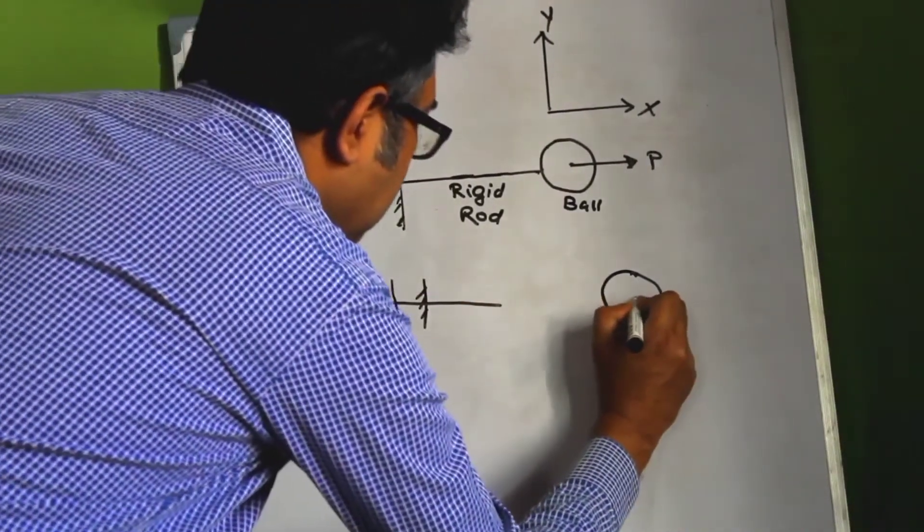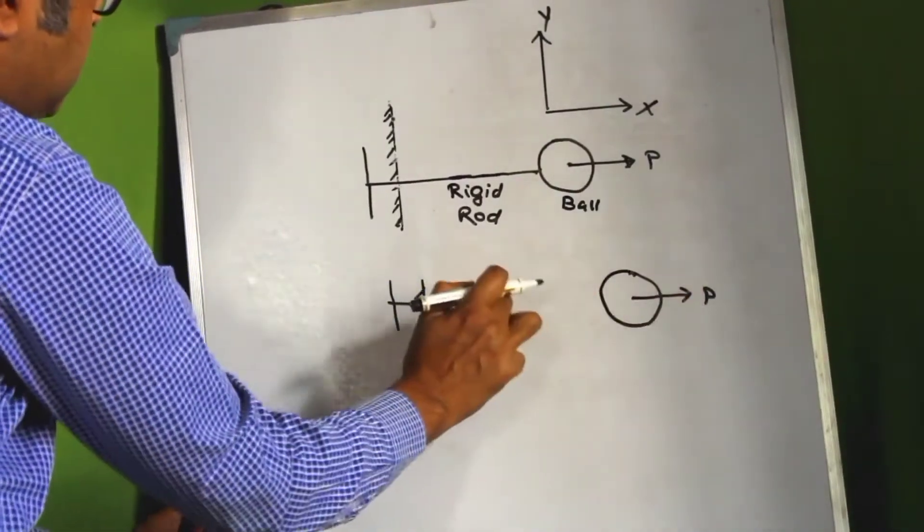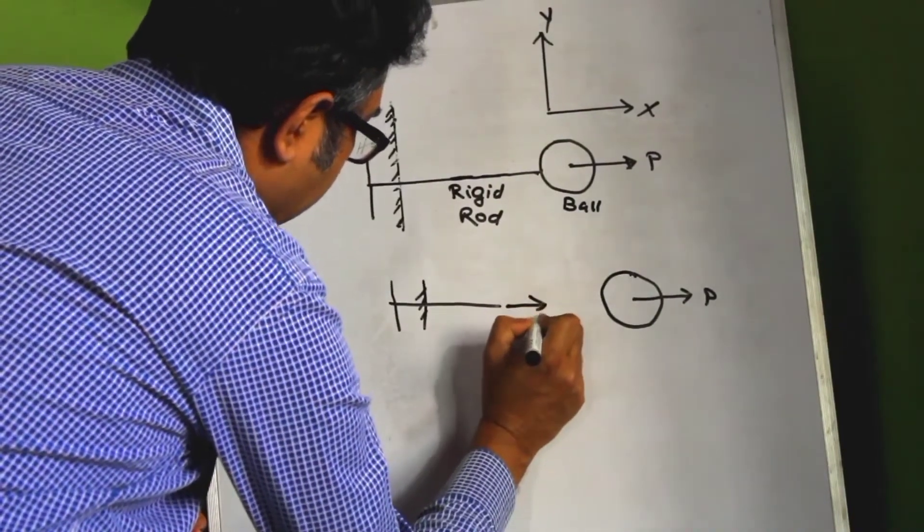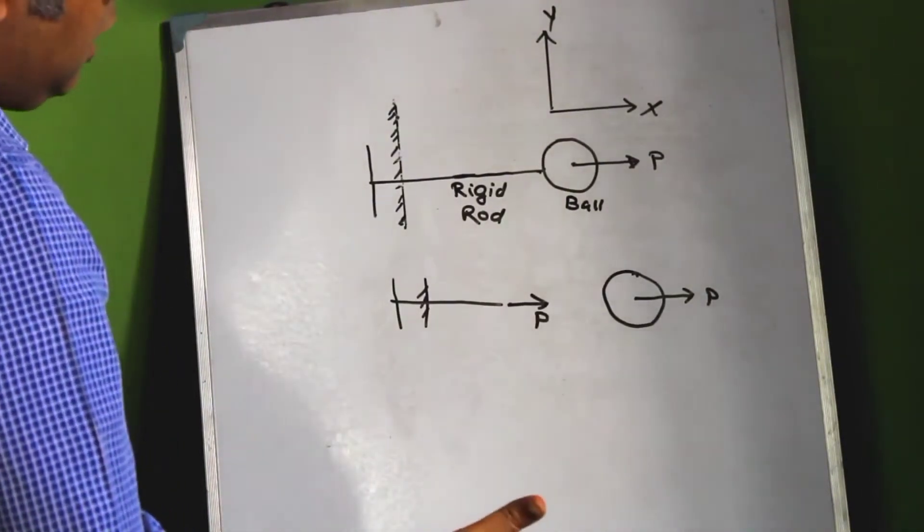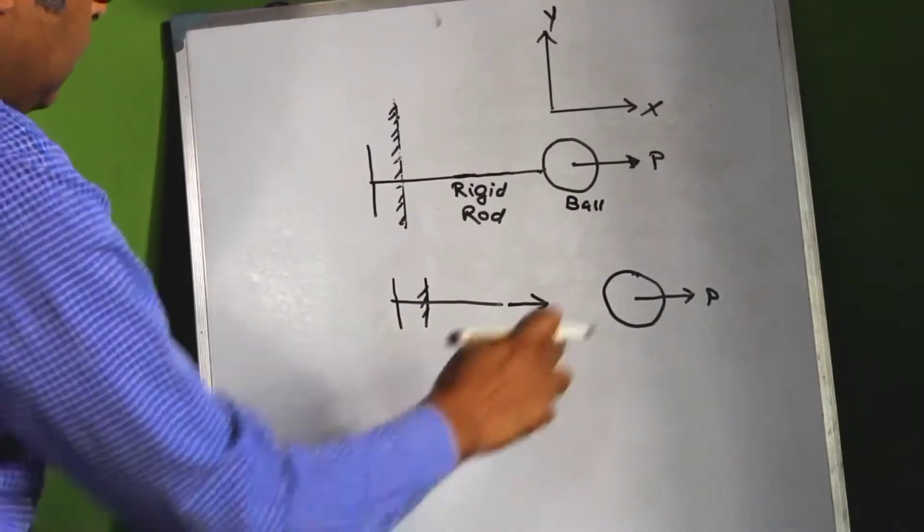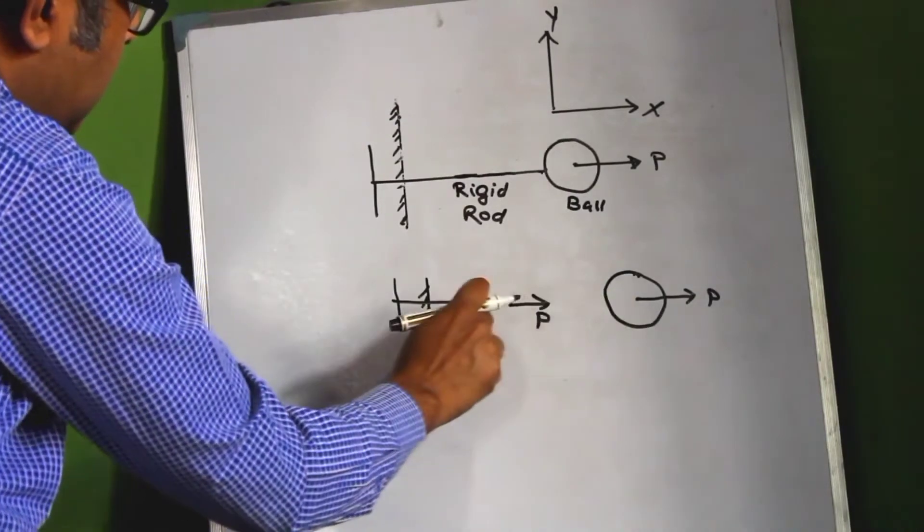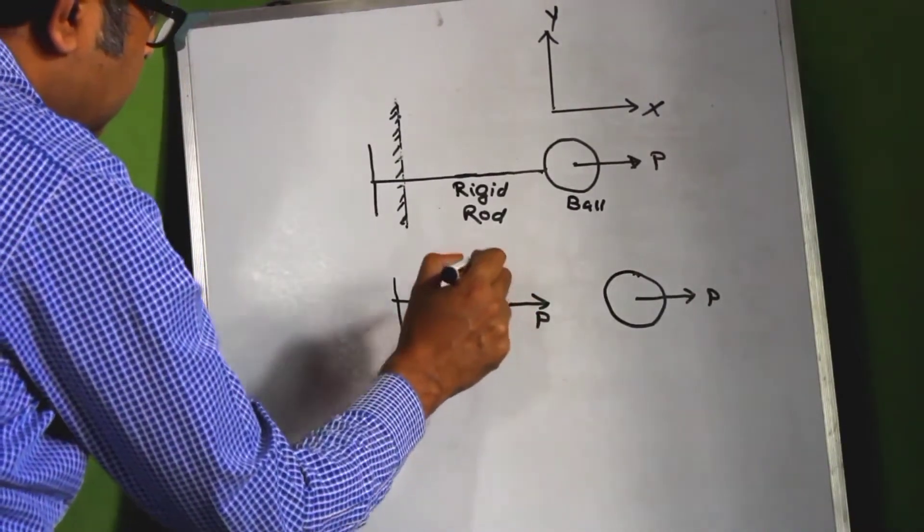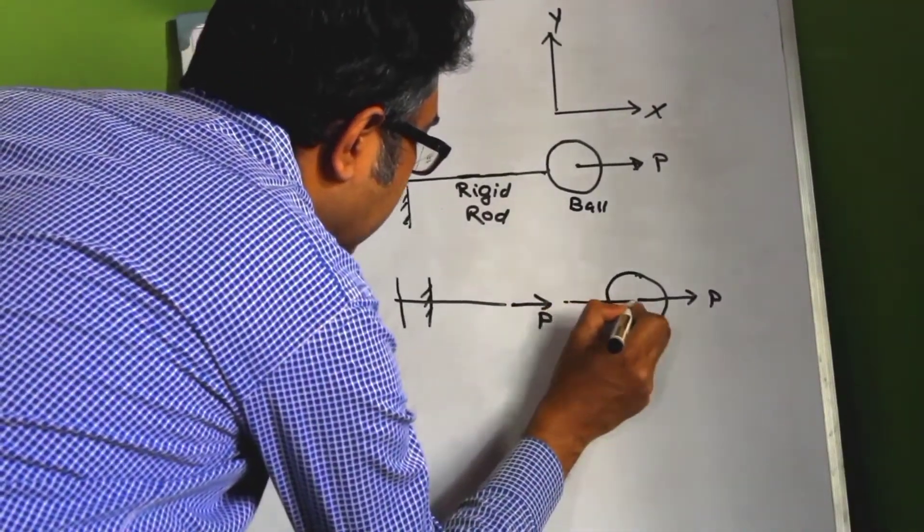Now when we try to pull the ball with force P, the force would be transmitted onto this rigid rod. So the rigid rod would also be pulled in this direction P. Now you probably remember Newton's third law of motion which states that every action has an equal and opposite reaction. Now this ball is actually transmitting the force to this rod. So this ball, we are pulling this ball, the ball is pulling this rod.